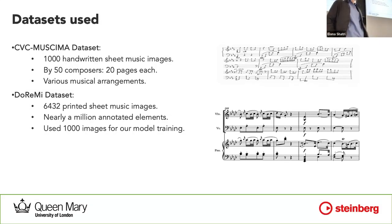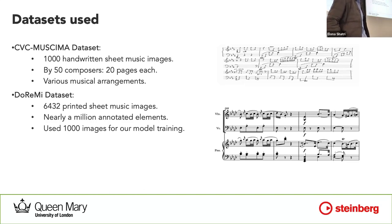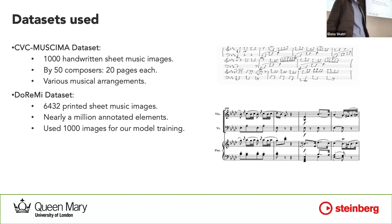They were written by 50 composers; each composer was asked to write 20 pages, so that means we have 50 different styles and various musical arrangements. DORAMI initially has 6,420 scores, but we use a portion of it — a lot of annotated data — which is also why we wanted to use DORAMI.